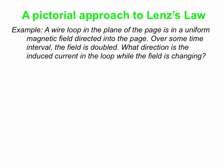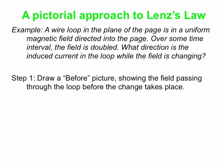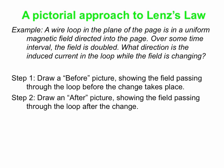Here's our pictorial approach applied to a typical Faraday's Law example, which we'll use Lenz's Law to figure out which way the current goes. We have a wire loop in the plane of the page in a uniform magnetic field directed into the page. During some time interval, the field is doubled in strength. While the field is changing, what direction is the induced current in the loop? We have a four-step process: draw a before picture showing the field lines through the loop before any change; draw an after picture showing the field after the change; compare the two pictures — if there is no change between them, then there's nothing to oppose. But usually the after picture is different from the before picture.